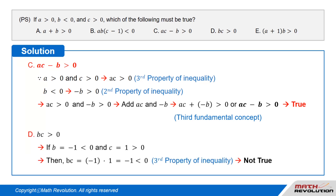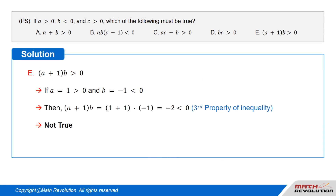Option D: B times C is greater than 0. If B equals negative 1 (which is less than 0) and C equals 1 (which is greater than 0), then B times C equals negative 1 times 1, which equals negative 1, which is less than 0, by the third property of inequality. Hence, this option is not true.